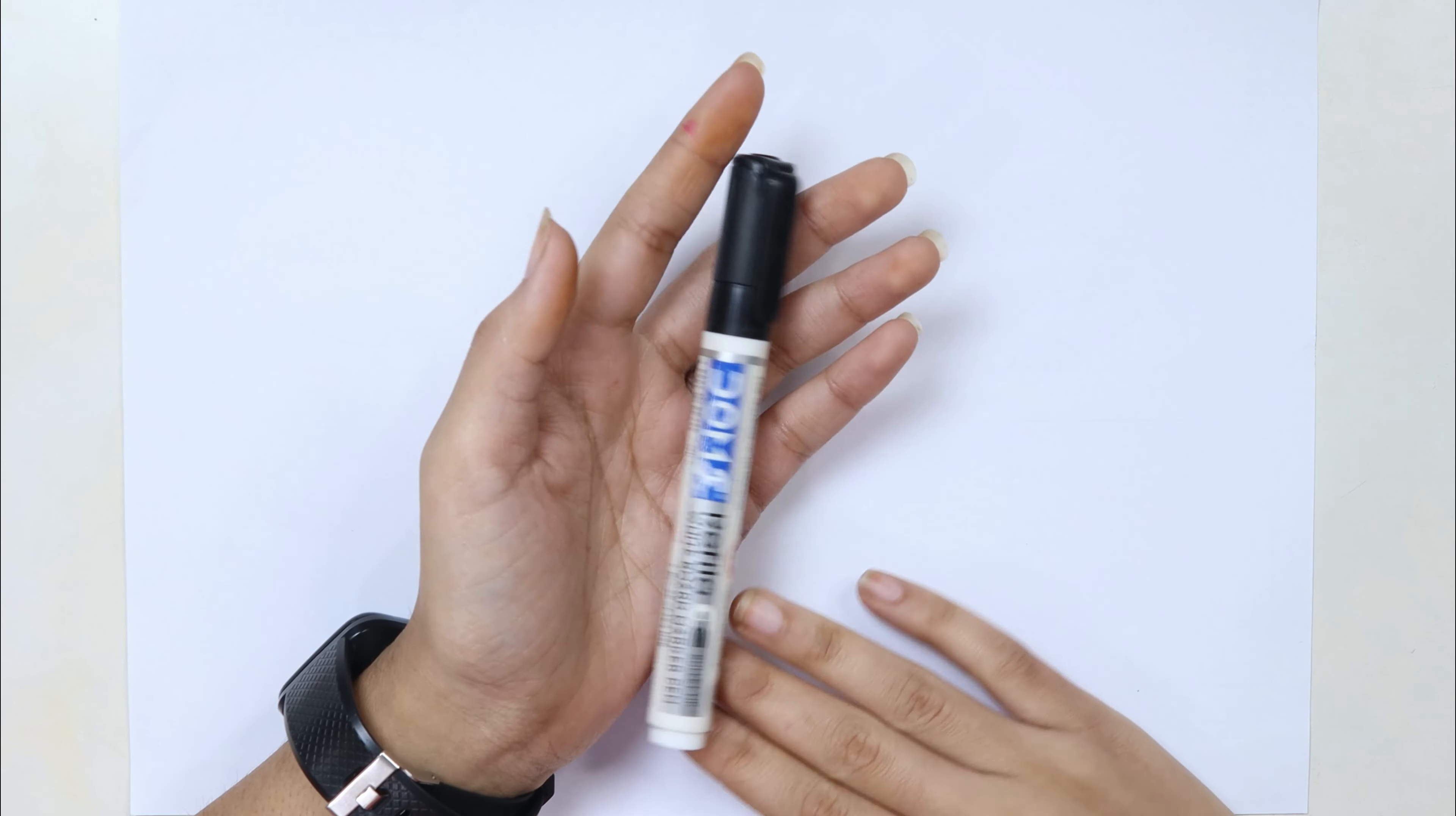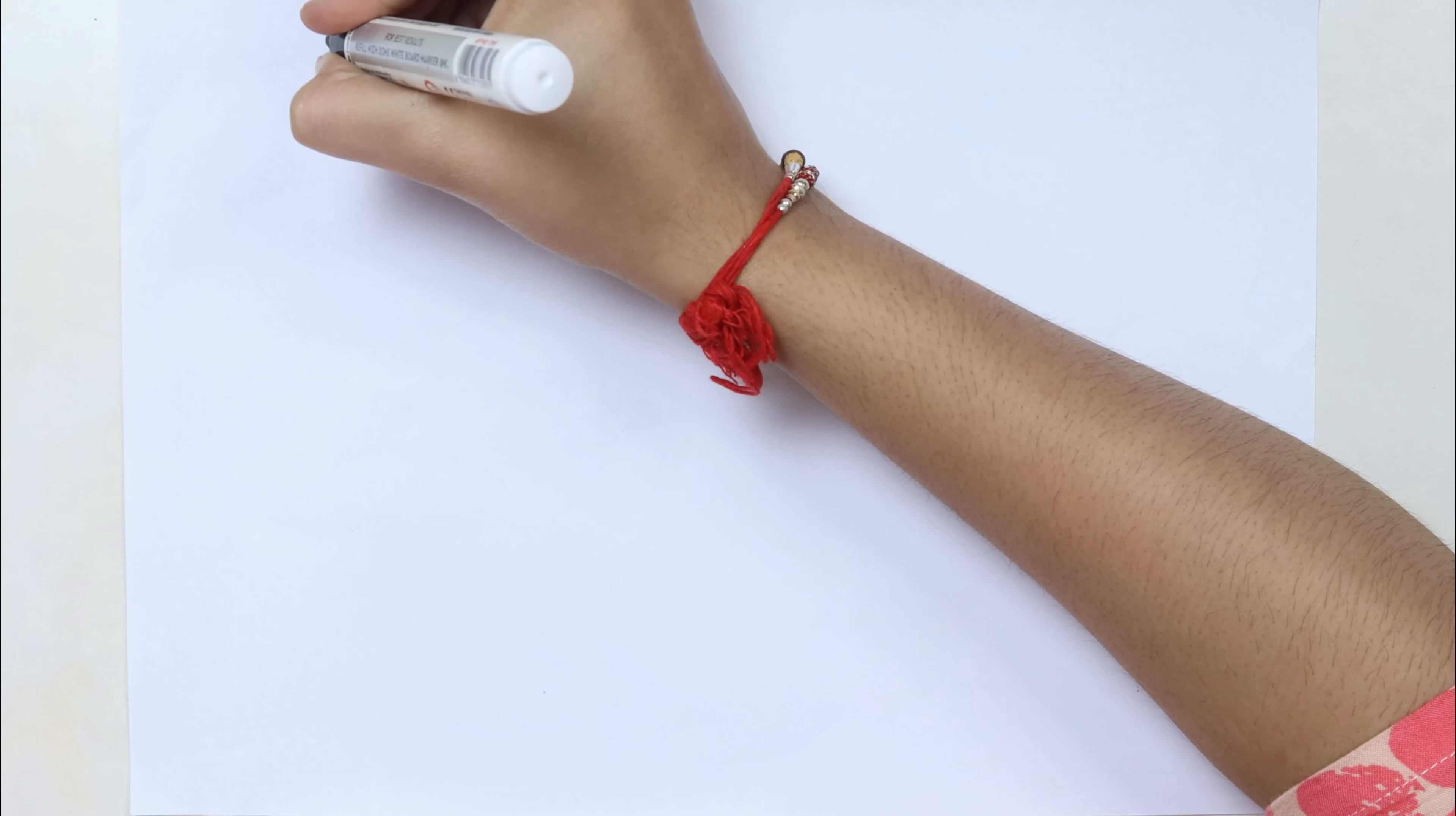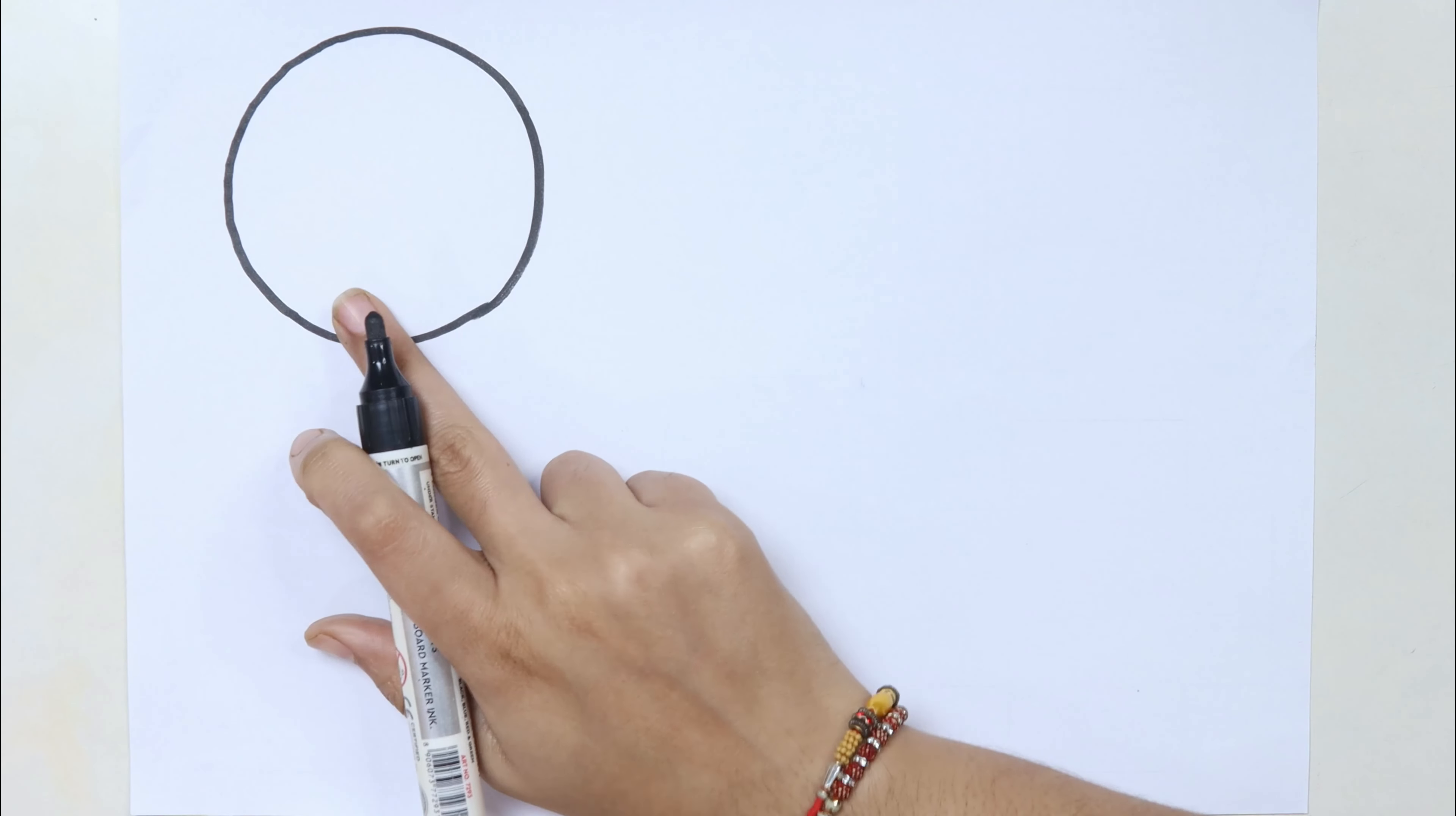This is the black color. Which color kids? This is the black color. Circle.